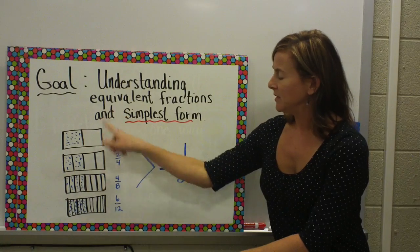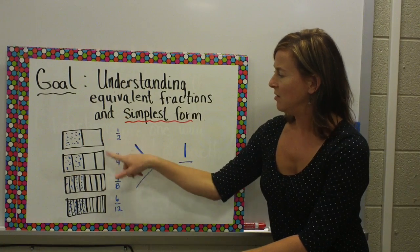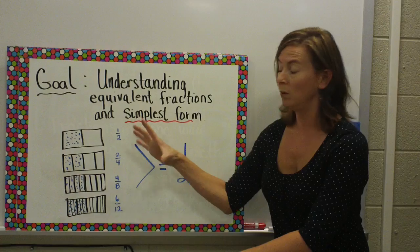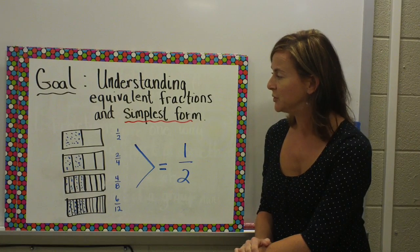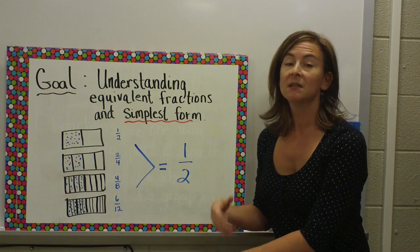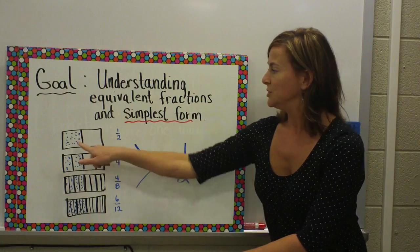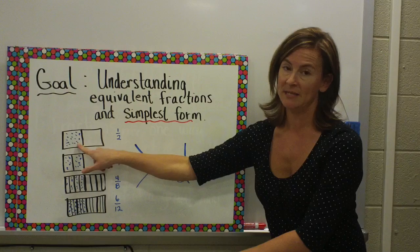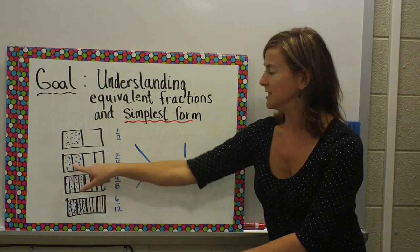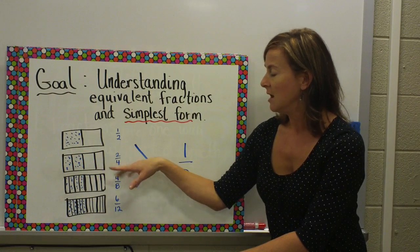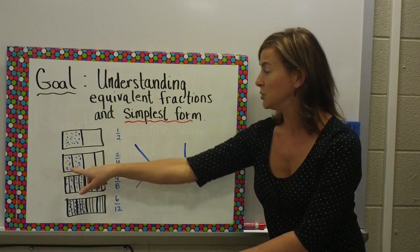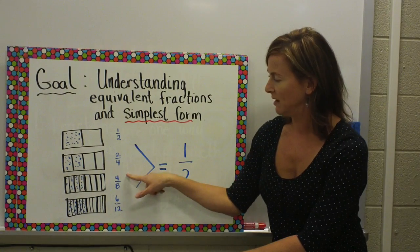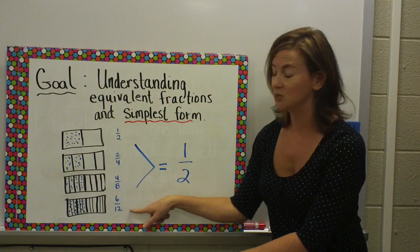In this example here, we have four different whole rectangles divided into different equal parts. In this representation, we have two equal parts, one of them has dots. In this representation, four of them, the rectangles divided into four, two of them have dots, and so on. So we have four eighths and six twelfths.